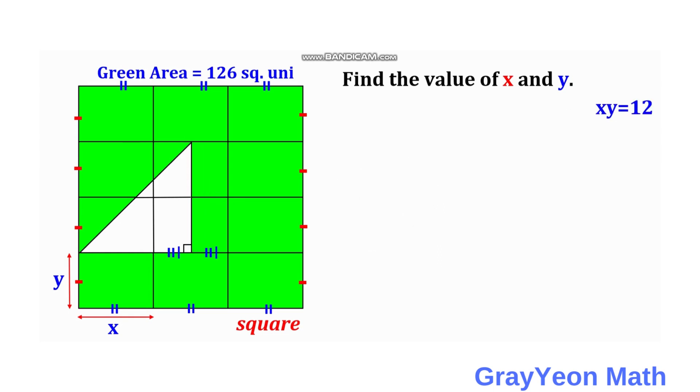After getting xy equals 12, since this is a square, the horizontal line is 3x and the vertical is 4y. Since they're equal, 3x equals 4y, so x equals 4/3 of y.